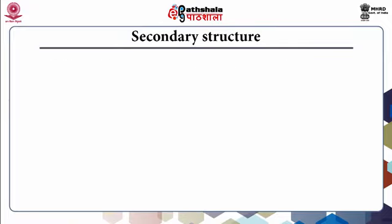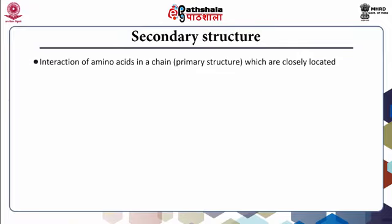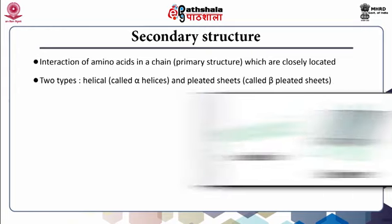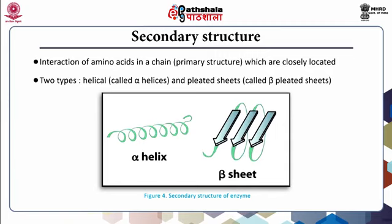The secondary structure in enzymes refers to the interaction of amino acids in a chain which are closely located. There are two types of secondary structures: helical structures called alpha helices, and pleated sheets called beta pleated sheets. We will look at the structure of alpha helices and beta pleats in detail in the slides ahead.